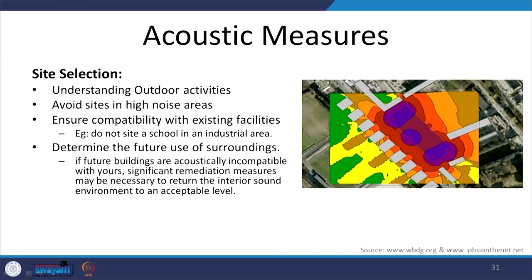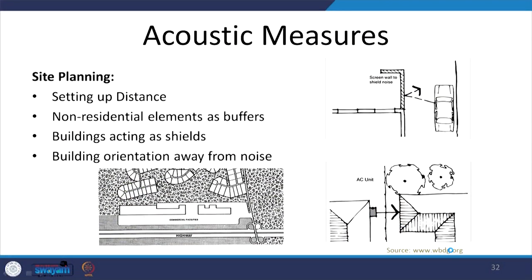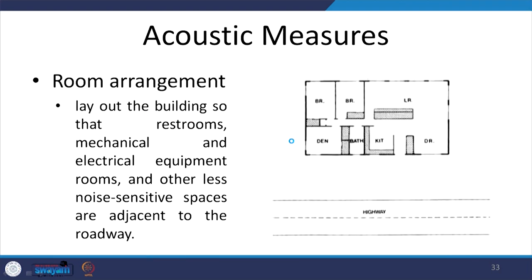Design measures for acoustic comfort begin with site selection — understanding where sound comes from and organizing activities so that noisy activities are placed in high-noise areas and quieter activities in quieter areas. We can consider the distance from noise sources, and use non-residential elements such as commercial facilities as barriers. For example, a large commercial development placed between a highway and a residential area acts as a sound barrier. Buildings themselves can act as shields, and orienting a building away from the noise source is also an effective strategy.